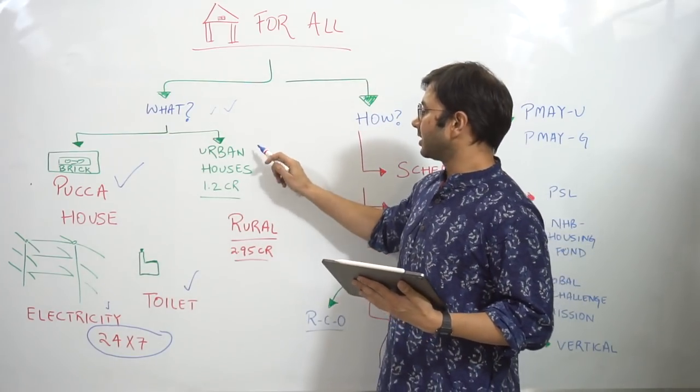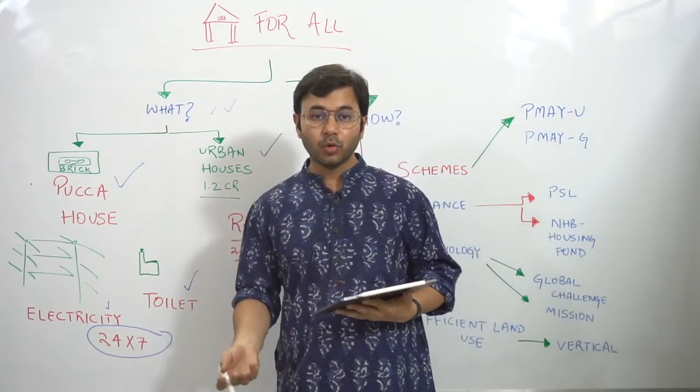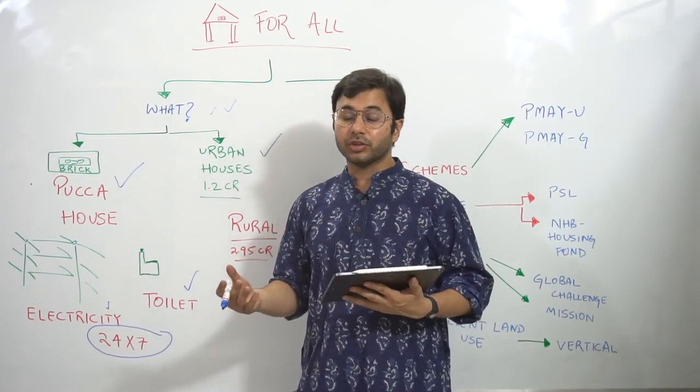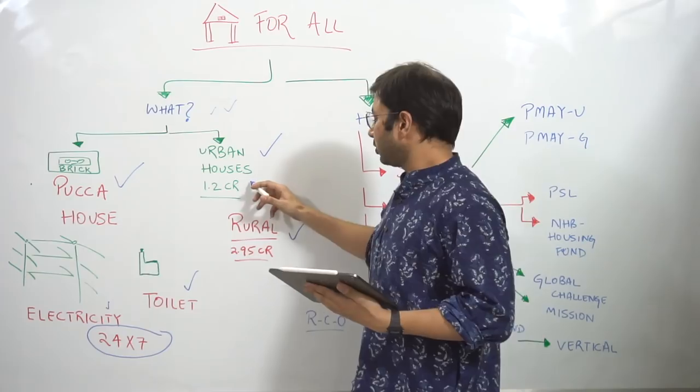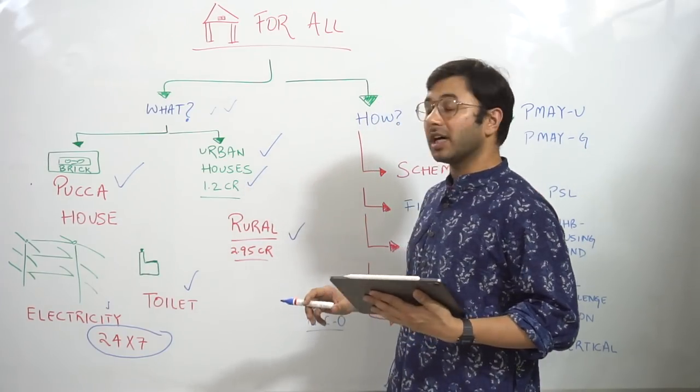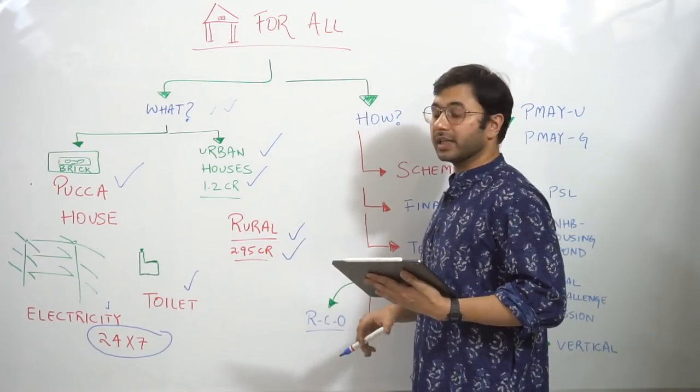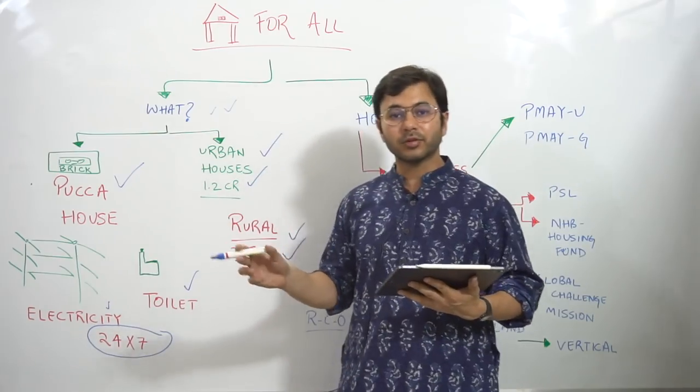And the second parameter is what is the shortfall? Because if you want to improve or work upon houses for everybody, you need to ensure or understand what are the problems that you're facing. So 1.2 crore houses are required to be made in urban areas. That is the target. And for rural, the target is 2.95 crore.